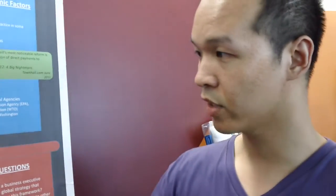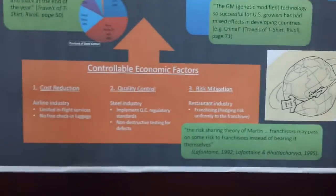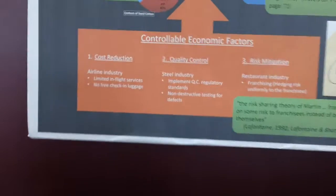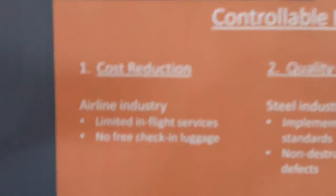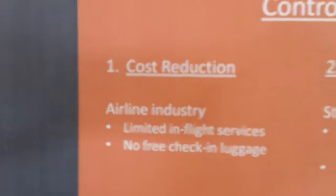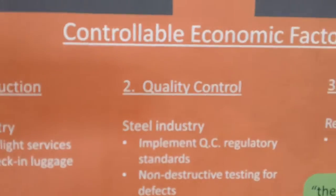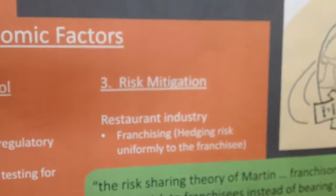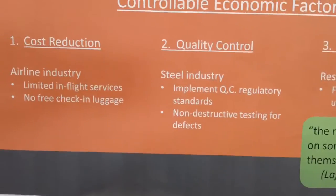We have a model of how the industry is developed. We also talked about some of the controllable factors that affect the industry. We talk about controllable economic factors, and three that we identified were cost reduction, quality control, and risk mitigation. We show different examples of different industries doing such.